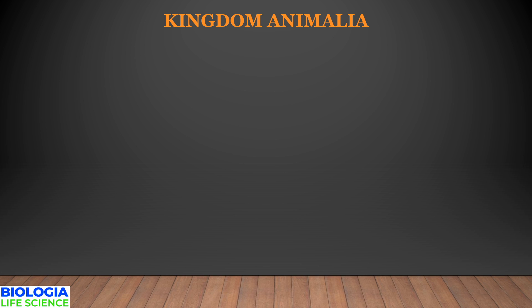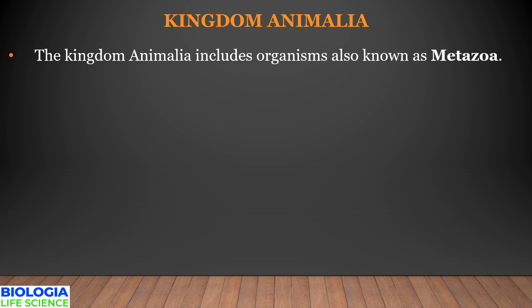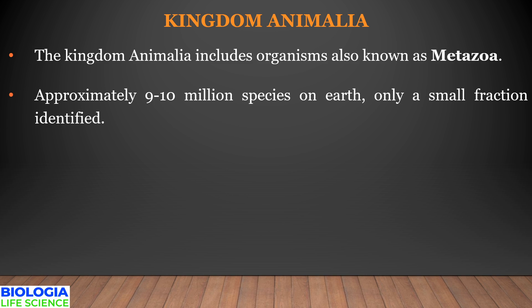Kingdom Animalia includes organisms also known as Metazoa. Metazoans are organisms having many cells, with cells differentiating into tissues and organs. They are heterotrophic, except Porifera.